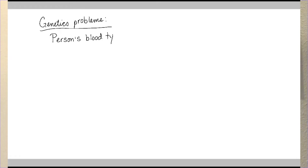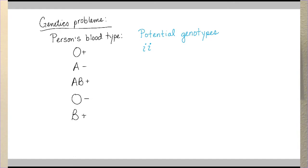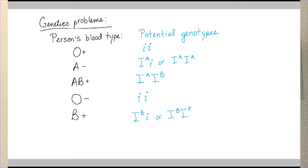Let's look at the potential genotypes for five blood types. For O type blood, there is only little i, little i — that's the only possibility. If you are A type blood, you must have at least one A allele; your second allele could also be A or a little i. If you are AB type, you must have an A and a B allele. If you're B type, you must have at least one copy of B, and your other allele can be a little i or another B.